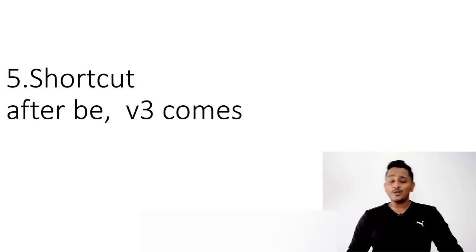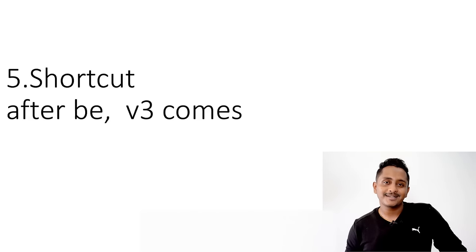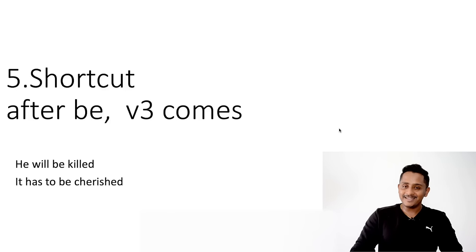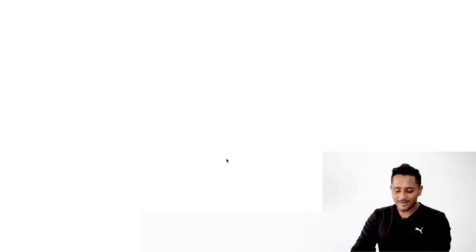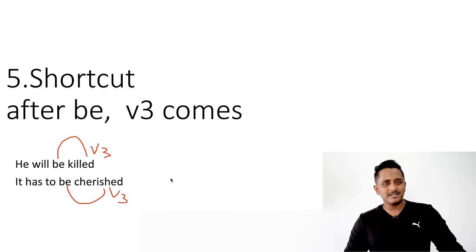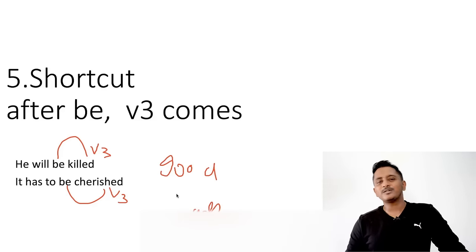Shortcut number five: after 'be', verb three or an adjective comes. 'He wants to be good' — adjective. 'He will be killed,' 'it has to be cherished' — verb three. So after 'be', look for either a past participle or an adjective in the options.